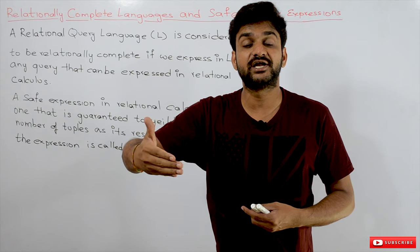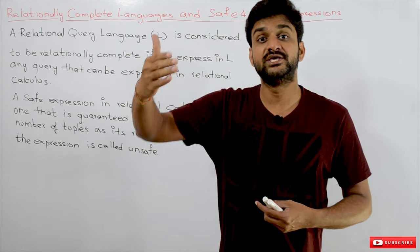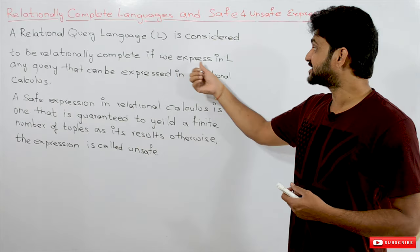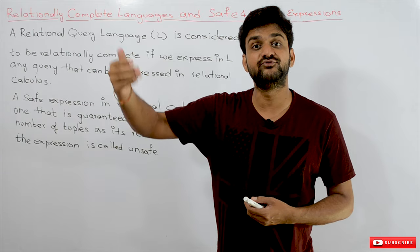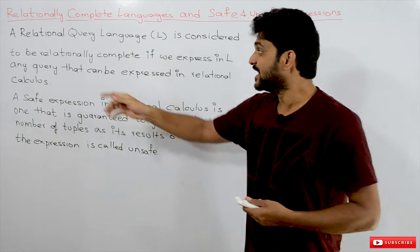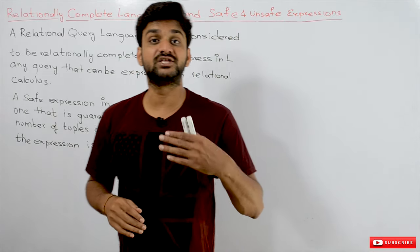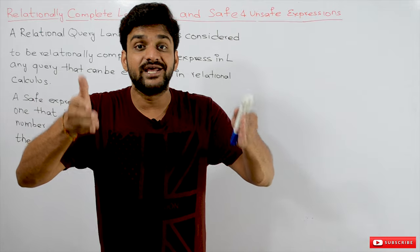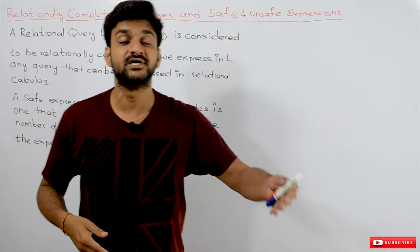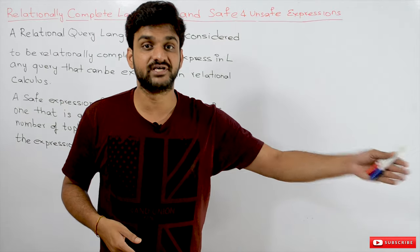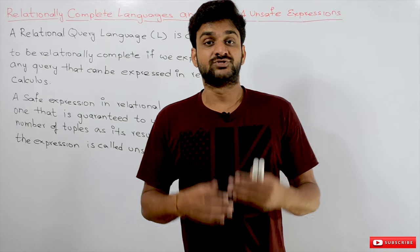That relational query language is considered to be relationally complete if we can express in that language — called L — any query that can be expressed in relational calculus. If all those expressions can be expressed in the relational query language, then that language is called relationally complete.